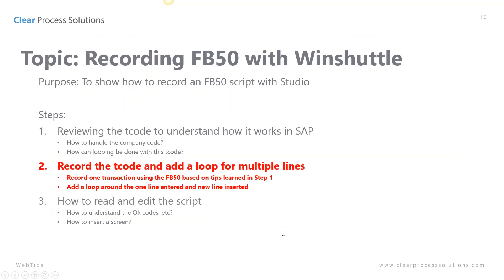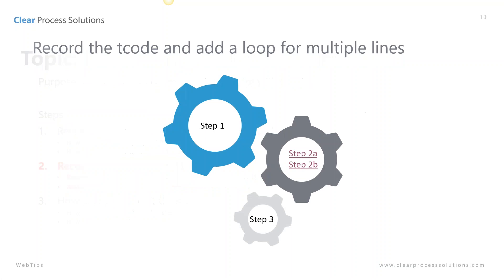Let's move on to the next step: how to record the T code and add that looping information. We're going to record the transaction using FB50 from the tips we learned in step one, and then we're going to show you how to add a loop around the one line that we entered and insert a new line.